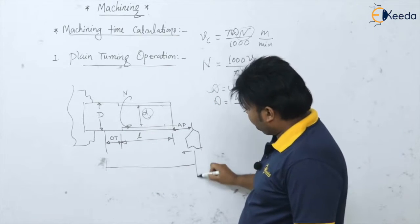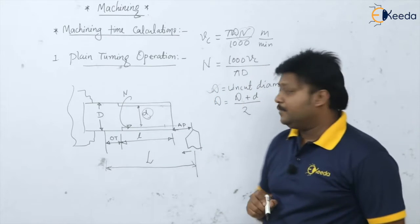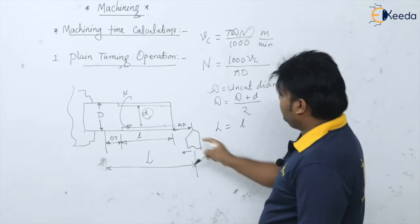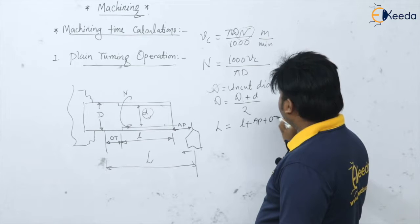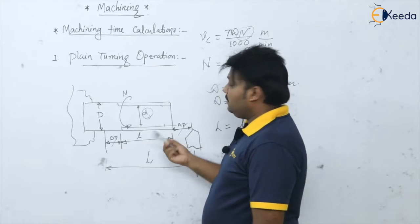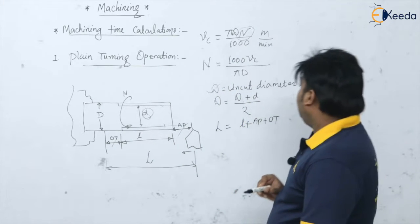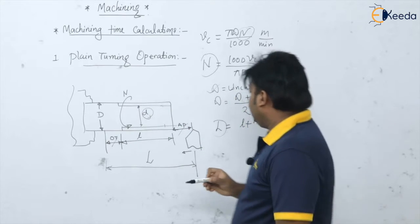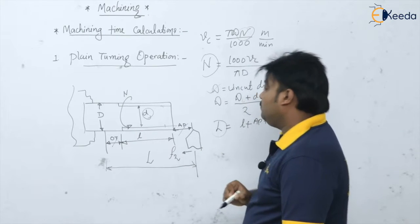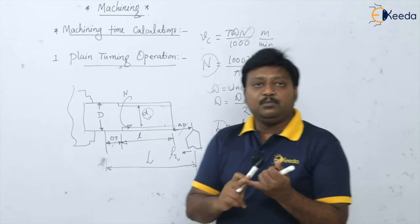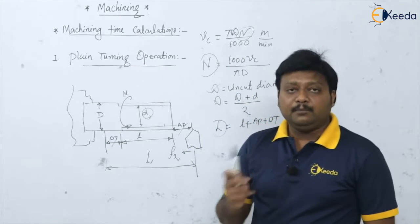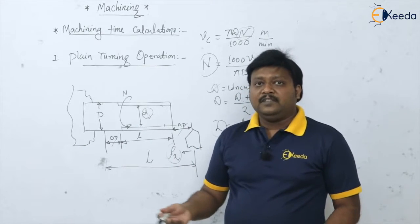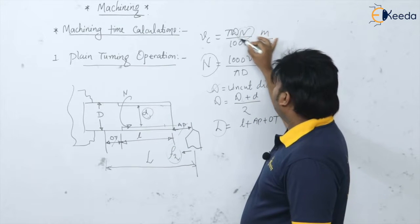We are interested in finding the total length traveled by the tool, say capital L. The total travel length equals the length of the machined part plus approach (if given) plus over travel (if given). These are optional; if not given, use the part length directly as L. Once you have L, you have the RPM of the spindle N, and the feed given to the tool. Note: f1 is feed per tooth, f2 is feed in mm per revolution, and f3 is table feed in mm per minute. f3 equals f2 times N.